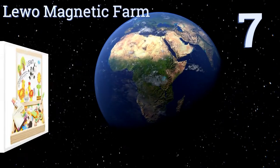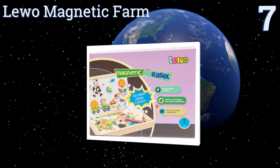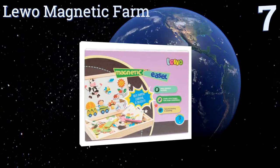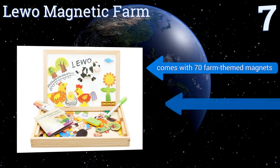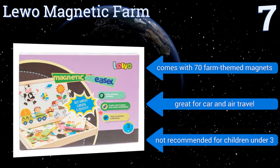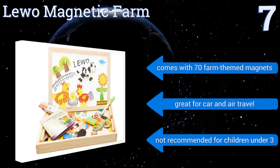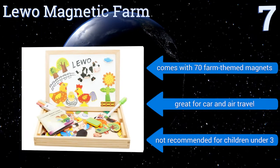Starting off our list at number seven, the Liwo Magnetic Farm is meant to be a starter set for kids, whether they be at home or in a preschool setting. The mounted frame folds into a carrying case that can be used for storing markers, stencils, and magnets. The collapsed set is small enough to fit under a bed. It comes with 70 farm-themed magnets and is great for car and air travel, but it's not recommended for children under three.